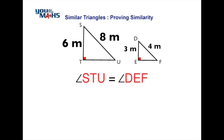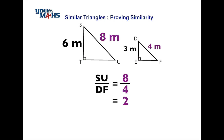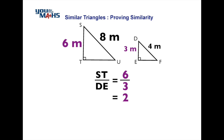We can also see that comparing the hypotenuses — large divided by small — gives us 8 divided by 4, which is 2, so the sides are in the ratio 2 to 1. We'll compare the other sides to see if the ratio is the same: the larger triangle over the smaller gives 6 divided by 3, which is also 2.